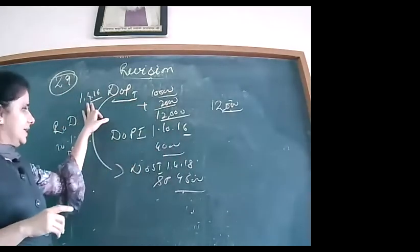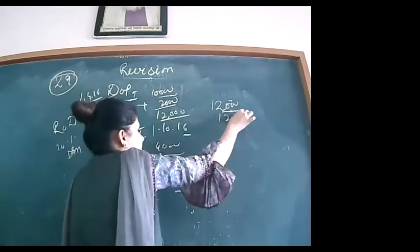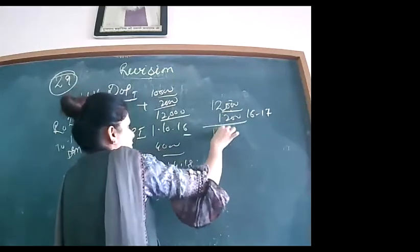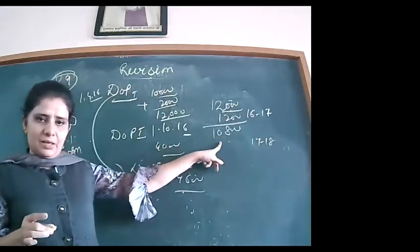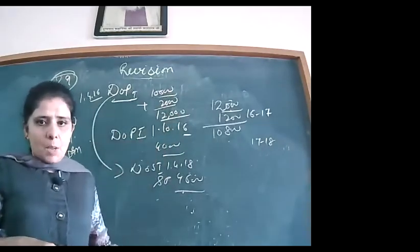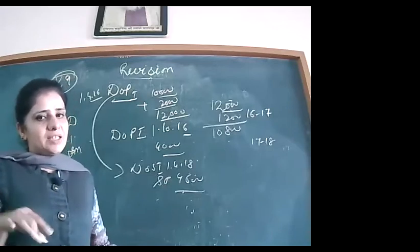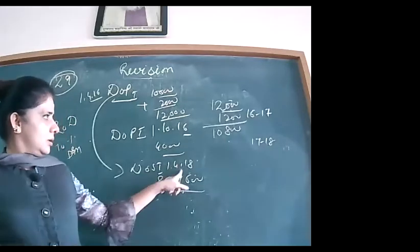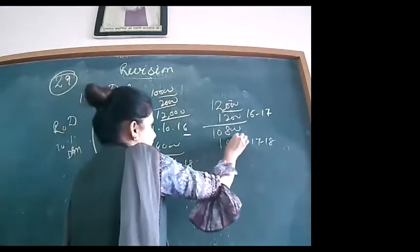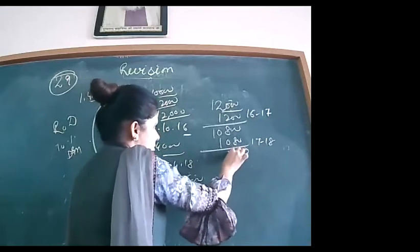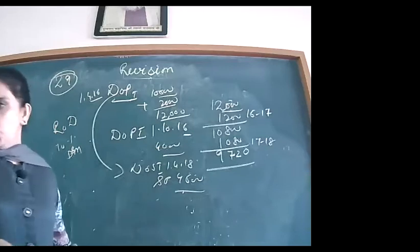Year 2 (2017–18): depreciation = 10% × ₹10,800 = ₹1,080; book value = ₹10,800 − ₹1,080 = ₹9,720. Machine 1 is sold on 1st April 2018 — the beginning of year 3 — so no depreciation charged in year 3. Book value at sale = ₹9,720. Selling price = ₹4,600. Since book value exceeds selling price, there is a loss.